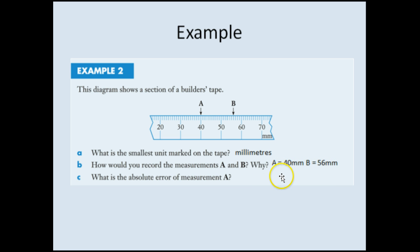So like I said, A is 40 millimeters and B is 56 millimeters. Why? They're the smallest units we have. If we had smaller units within here, we could be more accurate. But at this point in time, that's the smallest unit we have.